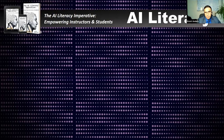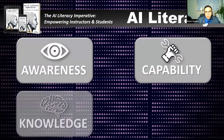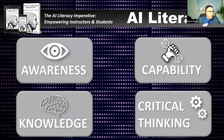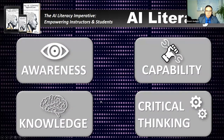I recently published this book, AI Literacy Imperative. I looked at a lot of different research associated with what AI literacy is and tried to put it all together into four different components: awareness, capability, knowledge, and critical thinking. Four simple components, but within each one it houses lots of different aspects.